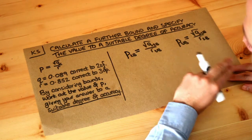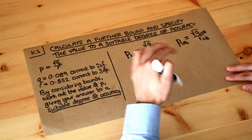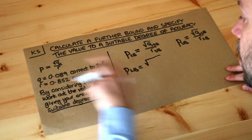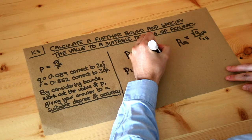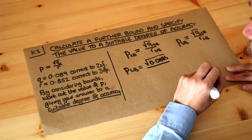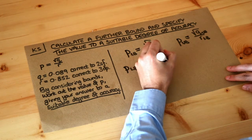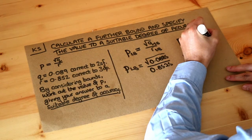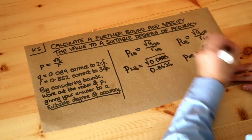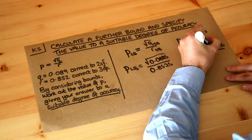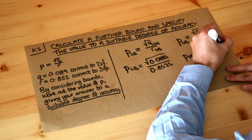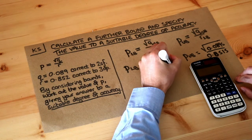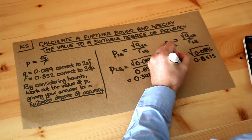I'll work each of these out quickly, assuming you're already comfortable finding lower and upper bounds. The lower bound of P is the square root of the lower bound of Q, which is 0.0885, divided by the upper bound of R, which is 0.8525. The upper bound of P is the square root of 0.0895 divided by 0.8515. Putting these into the calculator: the lower bound is 0.34896... and the upper bound is 0.35134...